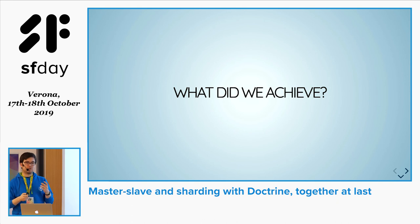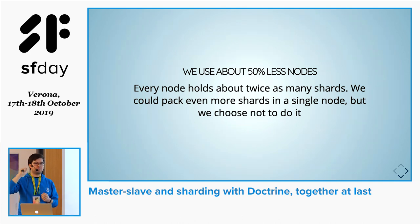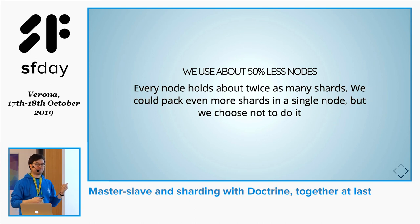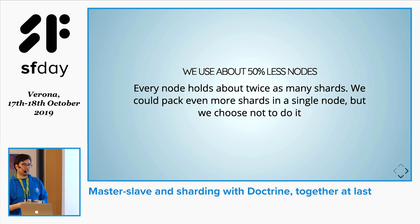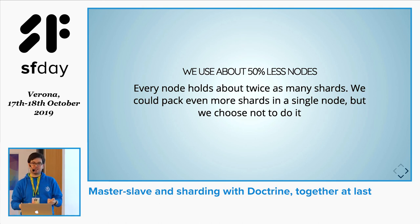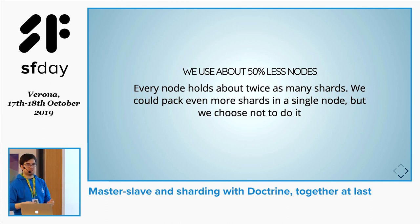What were our achievements? The main one is using 50% less nodes on the database side. Every node contains databases, and now we're able to pack about twice as many databases into a single node. This happens because now every database can scale independently. We could actually pack even more shards into a single node, but we don't want to overcrowd them — there's no reason for it, just for peace of mind. We are happy with the way everything works.